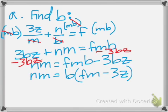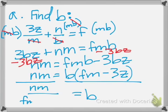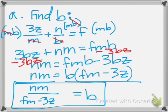And then, next step, divide everything by fm minus 3z. So, we end up with b is equal to nm over fm minus 3z.